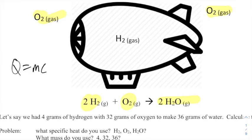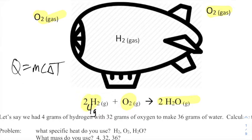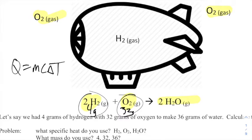Let's see if we can use q = mcΔT here. Take this on a much smaller scale — instead of a giant blimp's worth of hydrogen, let's say we had four grams. I've got 2H₂, which is four grams, and a perfectly stoichiometric amount of oxygen: 32 grams. Two moles of hydrogen is four grams, one mole of oxygen is 32 grams, and they make 36 grams of water.